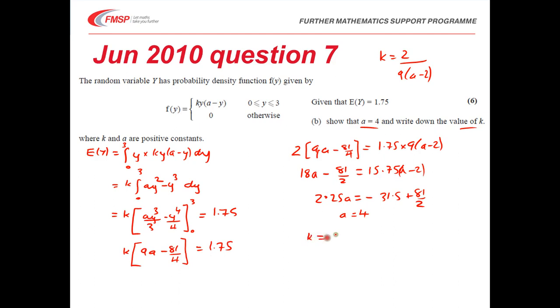So k, therefore, is 2 over 9 lots of 4 minus 2, and that gives me the value of k that I want, which is 1 ninth.